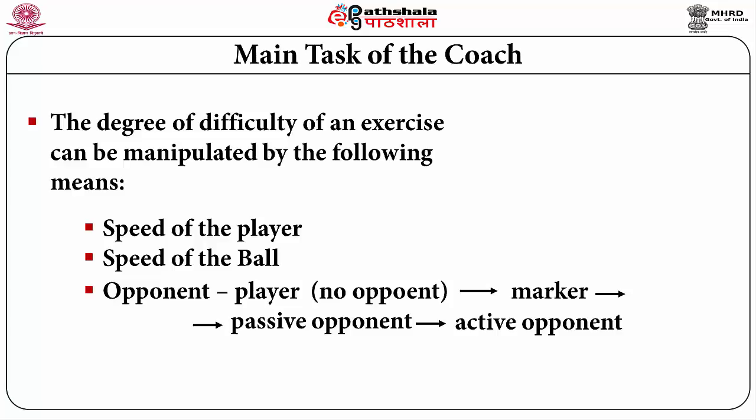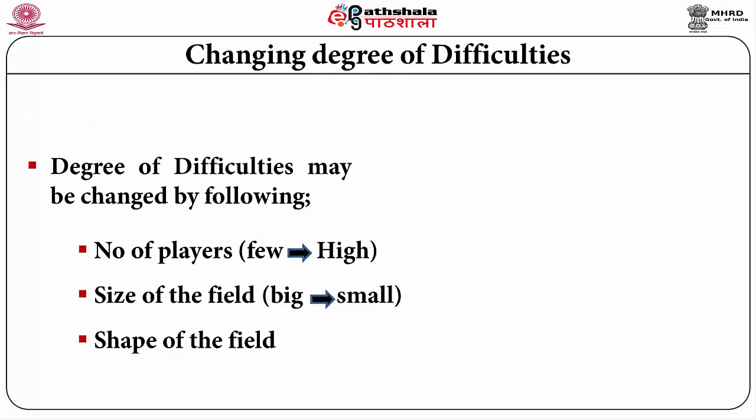Whatever we have discussed, here we are just summing up: the degree of difficulty of an exercise can be manipulated by the speed of the player, speed of the ball, and the opponent. Initially there may be no opponent — just standing giving an impression — or instead of a player, we may use a marker, then a passive opponent, and then an active opponent.